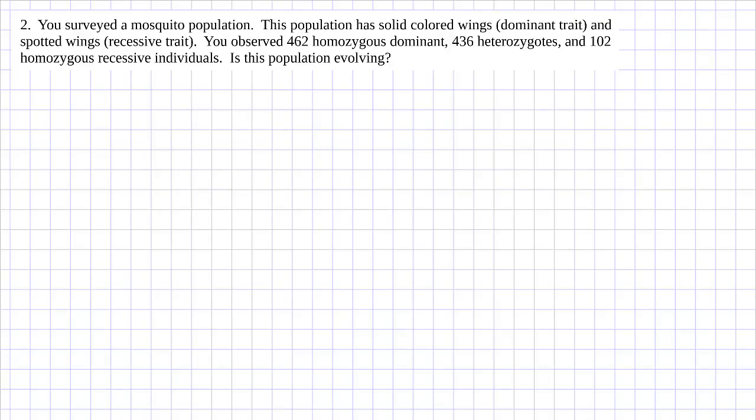This is a second practice problem in our Hardy-Weinberg Extra Practice Problem Set. In this question I ask, is the population evolving? We're going to be working with a mosquito population. This population can either have solid colored wings or spotted wings. For this problem, our solid trait will use the big W allele. Our spotted trait will use little w.